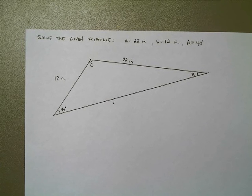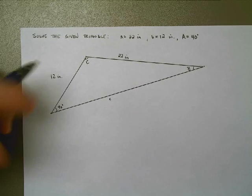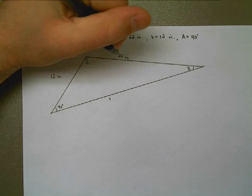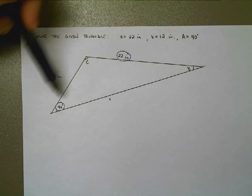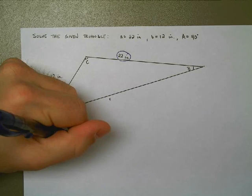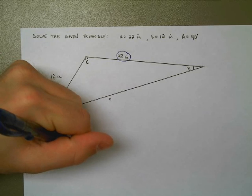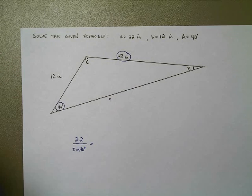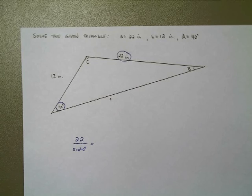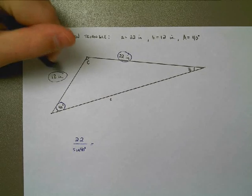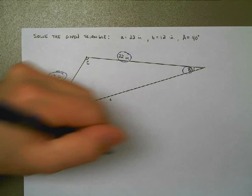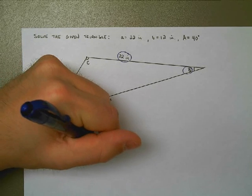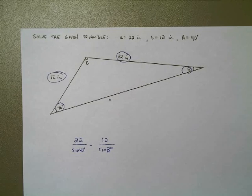To attack this kind of problem, we're going to use the law of sines. According to the law of sines, the length 22 inches over the sine of its opposite angle — sine of 40 degrees — should be equal in proportion to the 12-inch measurement over the sine of its opposite angle, which is angle B. I picked these two measurements because there's only one thing I don't know out of those four values, and that's what angle B is.